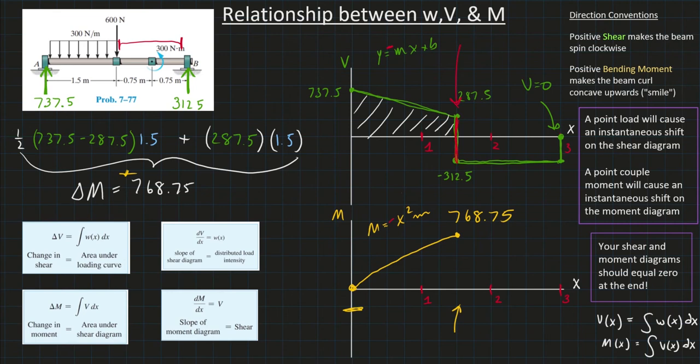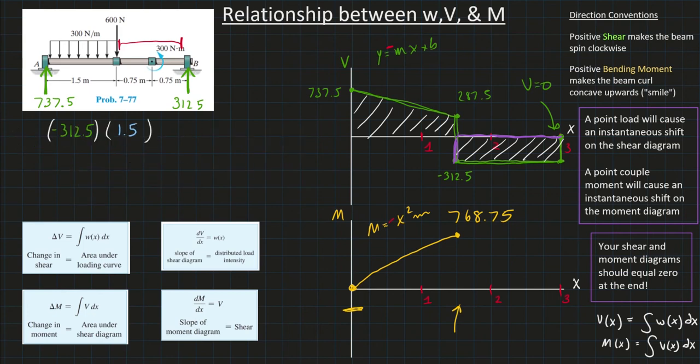Okay, next we get this, this drop here. Well, there's no area under this drop here. It's thin, infinitesimally thin. So, nothing going on here. So, next I got to calculate my area here. Well, that's going to be easy. That's just a rectangle. Height is negative 312. Length is going to be 1.5. So, if I crunch that math, I'll find out that my change in my moment curve should be a negative 468.75. Now, I realize I just made a mistake here.